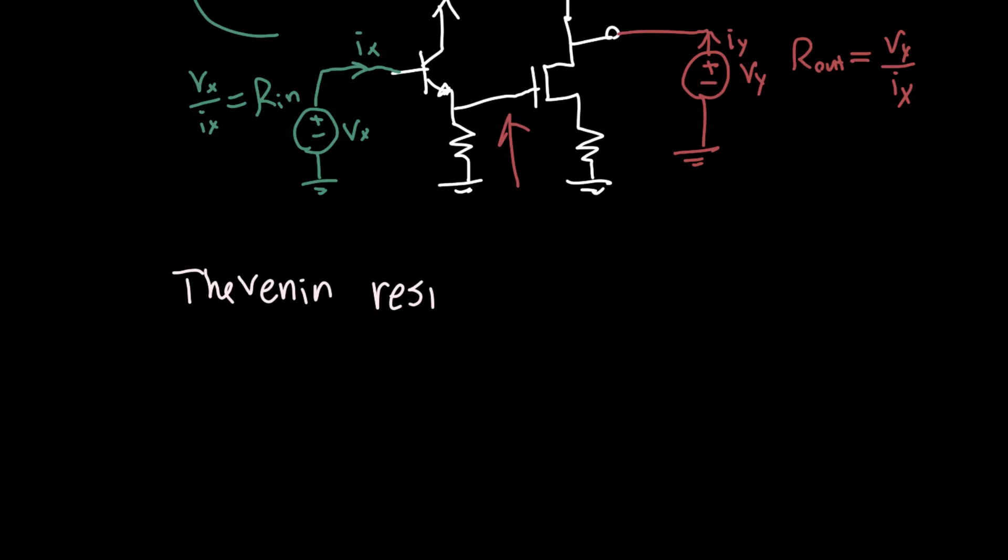So it allows us to decompose circuits of arbitrary complexity into two quantities: Rin and Rout.